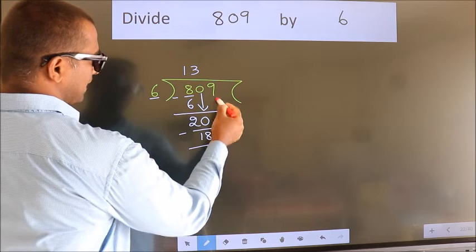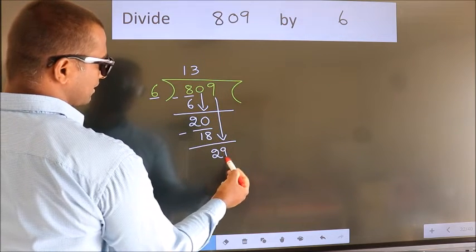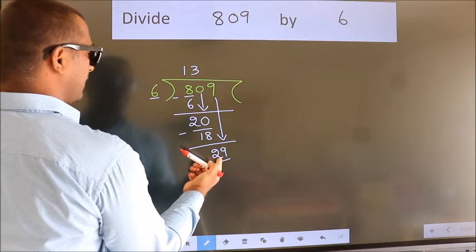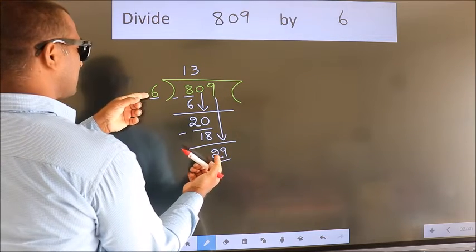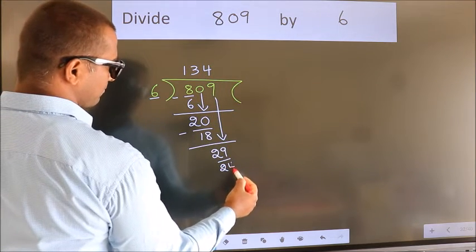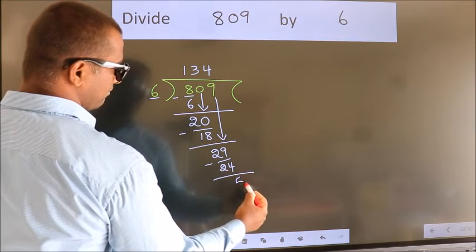After this, bring down the beside number. So 9 down. So 29. A number close to 29 in 6 table is 6 fourths, 24. Now we subtract. We get 5.